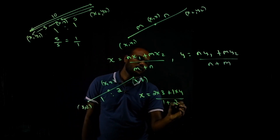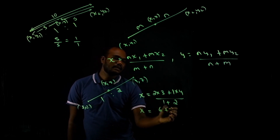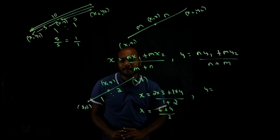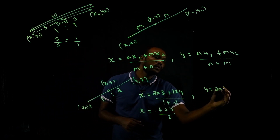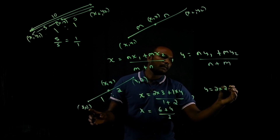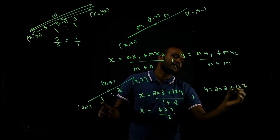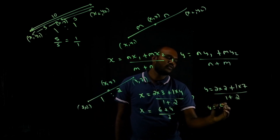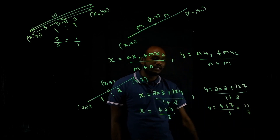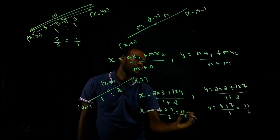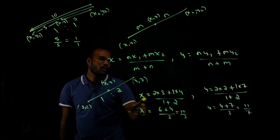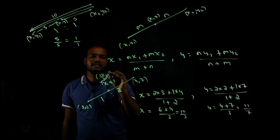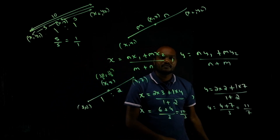So x equals 2 threes are 6 plus 4, divided by 3, that is 10 by 3. In the same way for y: 2 into 2 is 4, plus 1 into 7 is 7, divided by 3, that is 11 by 3. So the point x comma y is 10 by 3 comma 11 by 3.